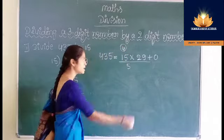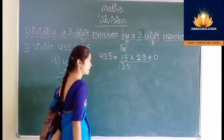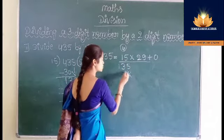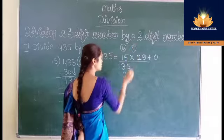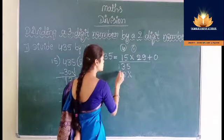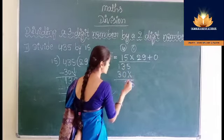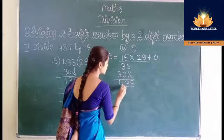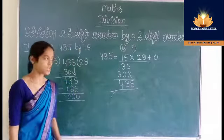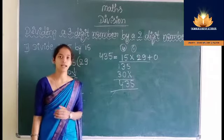So we get 5, then 3 plus 0 is 3, 1 plus 3 is 4. We get 435. LHS is equal to RHS — our division is correct.